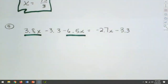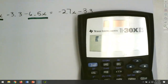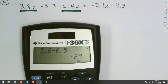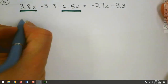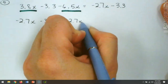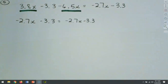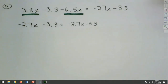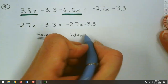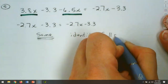We'll put those together using the calculator. We've got 3.8 minus 6.5, and that comes out to be minus 2.7. So that's the x component. Now what do you notice? Before we go any further, these are exactly the same on both sides — which means it would be an identity, and the solution set is all real numbers.